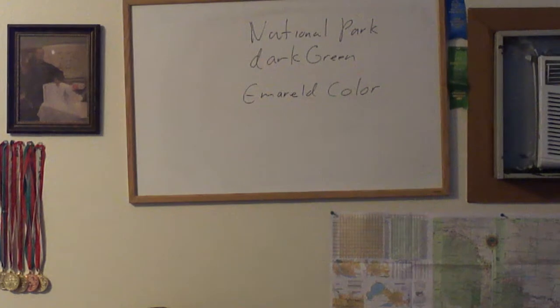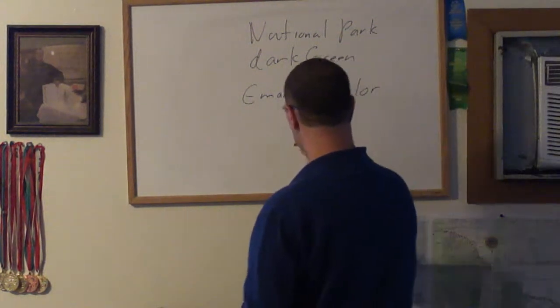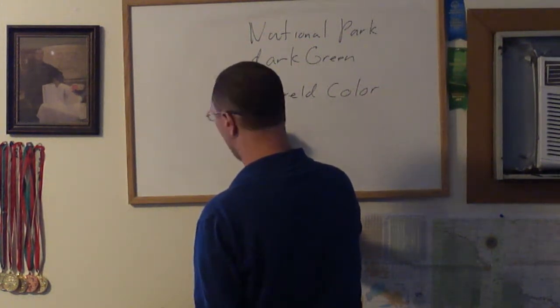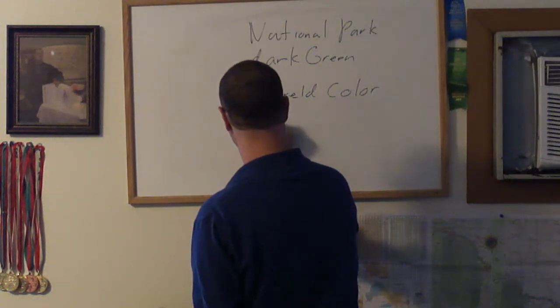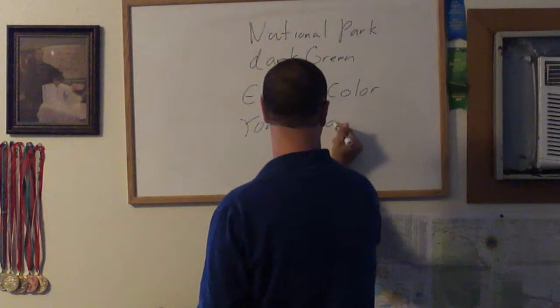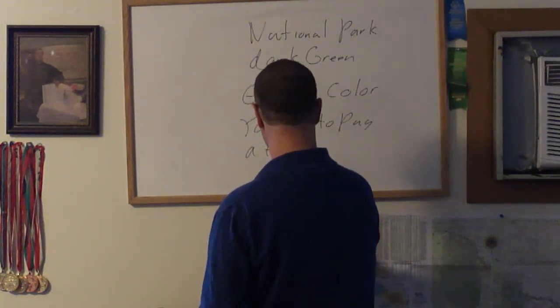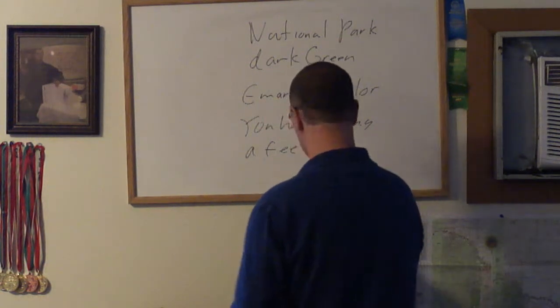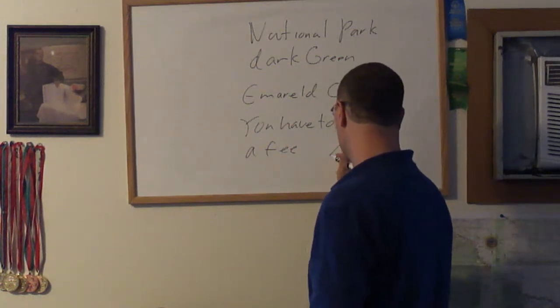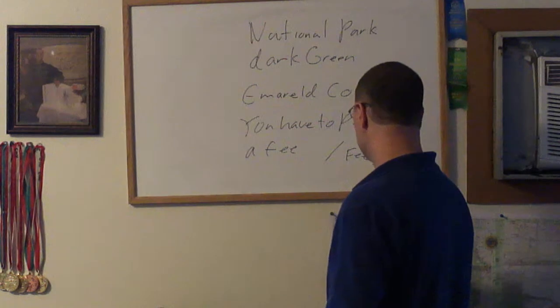In terms of National Park, in most parts you have to pay a fee. The black line right there is a B. It means fee.